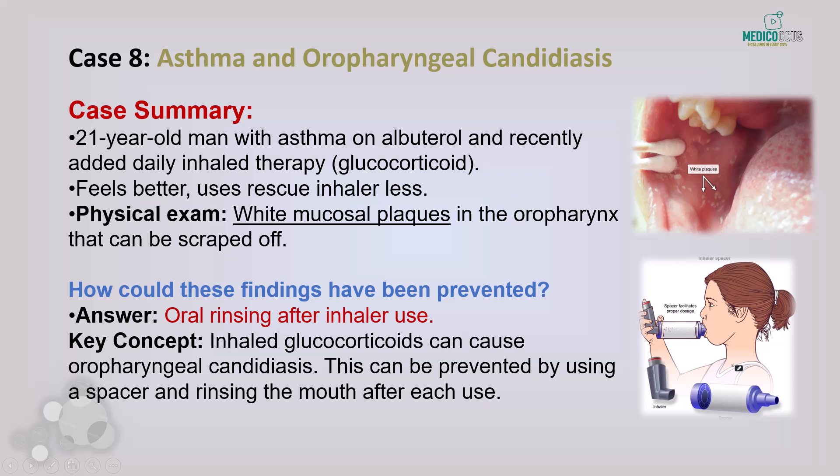Case 8: A 21-year-old man with asthma using inhaled glucocorticoids and a rescue inhaler presents with white mucosal plaques in the oropharynx that can be easily scraped off — classic findings of oropharyngeal candidiasis. This complication occurs when poor inhaler technique causes medication to deposit on the oral mucosa rather than reaching the lungs, creating an environment where yeast can thrive. Prevention involves rinsing the mouth thoroughly after each inhaler use and using a spacer to ensure more medication reaches the lungs.